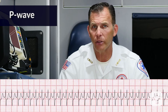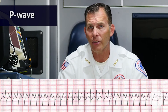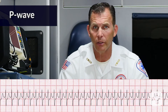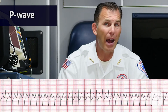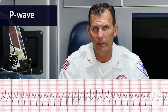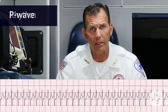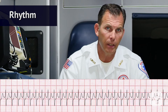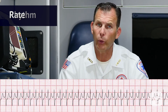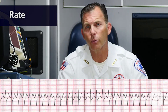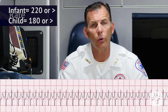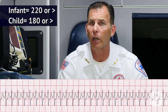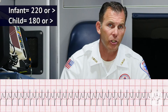Next, determine if there is a P wave present for each QRS. P waves are not present or may appear abnormal with SVT, possibly even appearing after the QRS. We should also determine if the rhythm is regular or irregular and determine the rate. SVT presents with a heart rate of 220 times per minute or greater in an infant, or 180 times per minute or greater in a child.